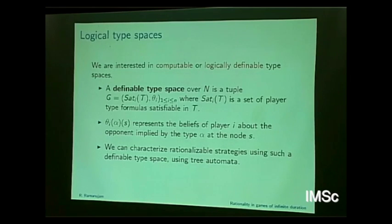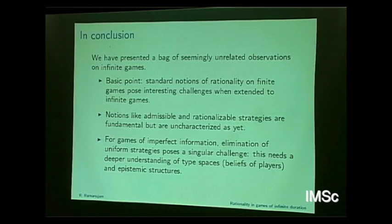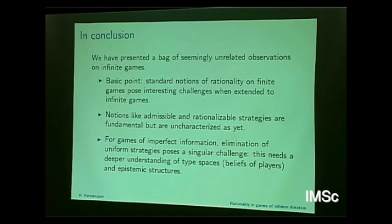What we can do is actually characterize rationalizable strategies using some definable type space — when the entire type space is definable in a particular logic using tree automata, I can characterize the type spaces. So for one particular case, at least, one can give some kind of regular rationalizable strategies, though it stands in isolation relative to the rest. The basic point is that standard notions of rationality on finite games pose very interesting challenges when we extend to games of infinite duration. Notions like admissible and rationalizable strategies are fundamental to game theory but are not yet characterized for regular infinite games. For games of imperfect information, elimination of uniform strategies poses a singular challenge — this needs a deeper understanding of type spaces and epistemic structures, especially for infinite games of imperfect information even for the regular case.